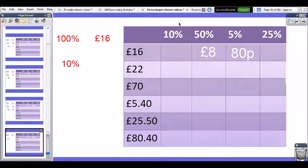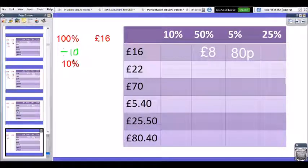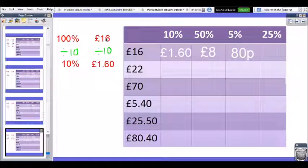How do I find 10% of a number? Well, think back to what we just said. To get from 100% to 10%, we divide that number by 10. So I must divide 16 by 10 to get £1.60.